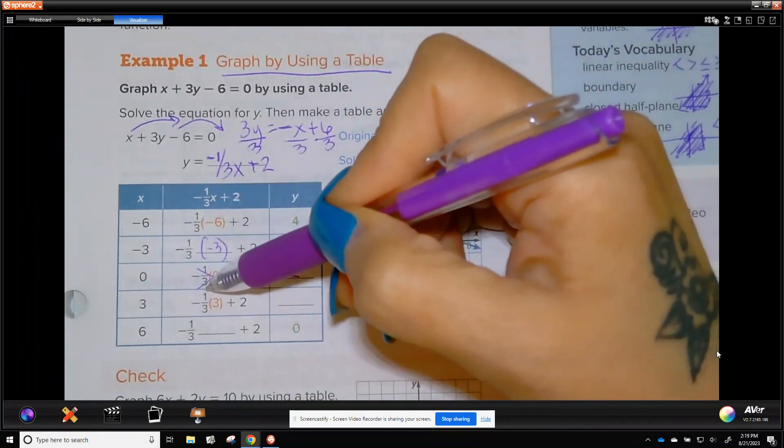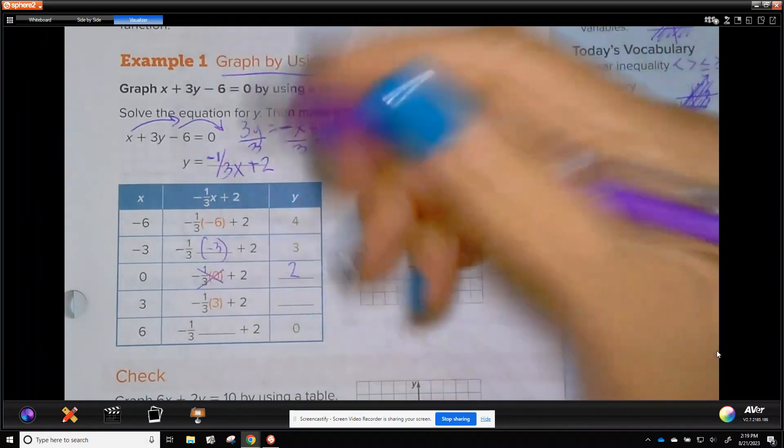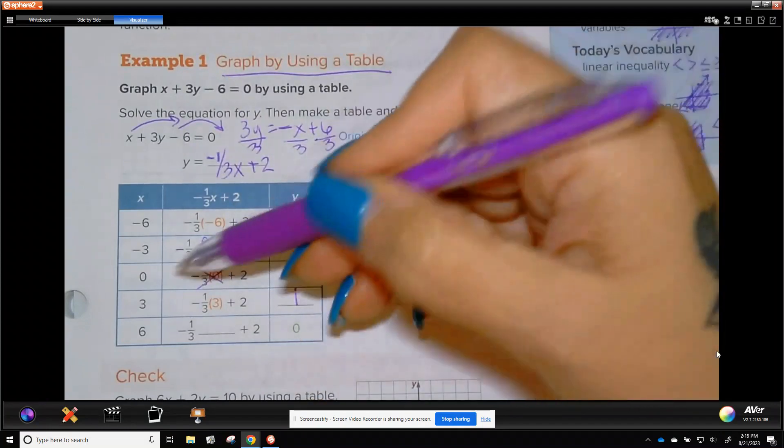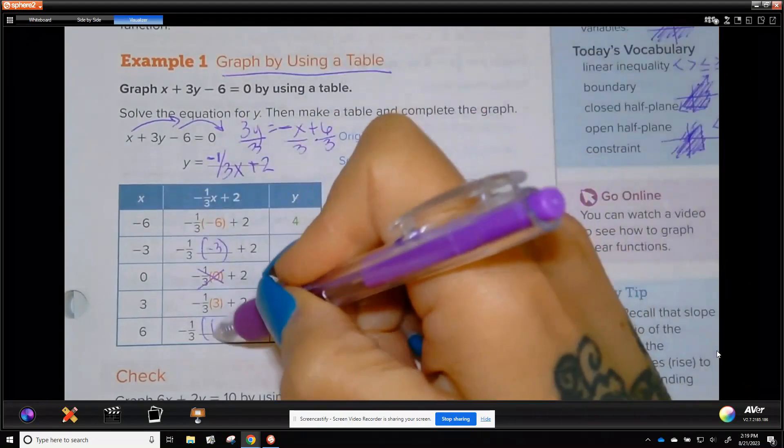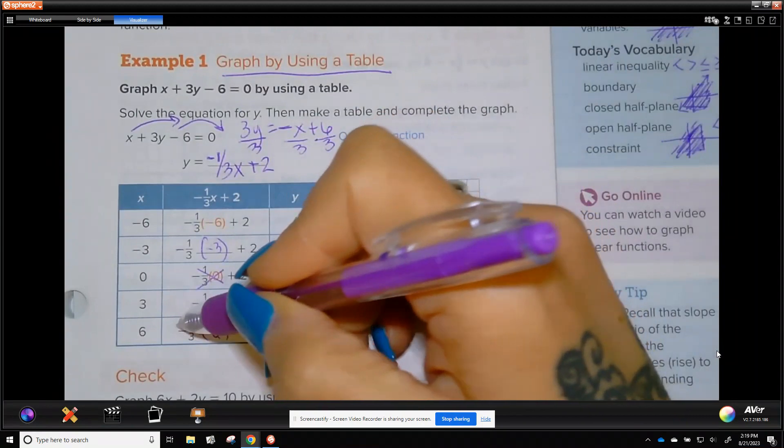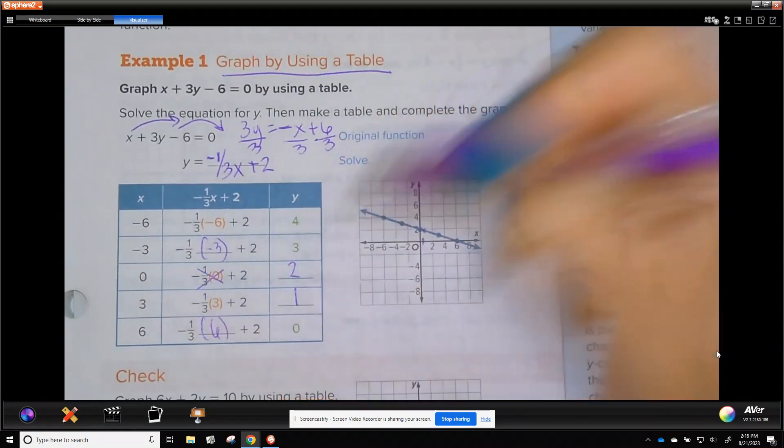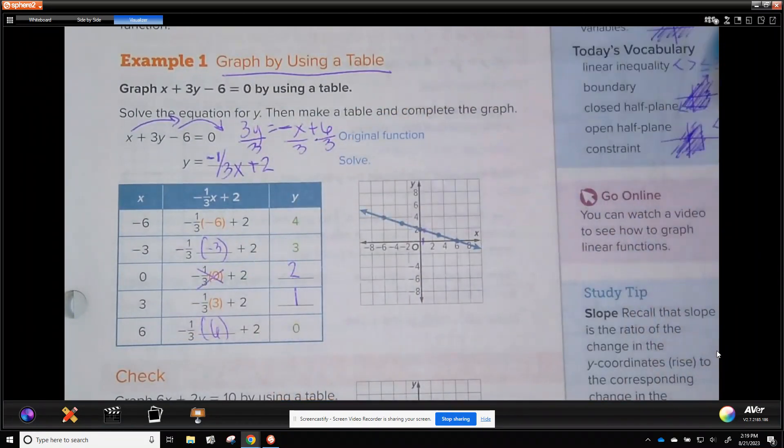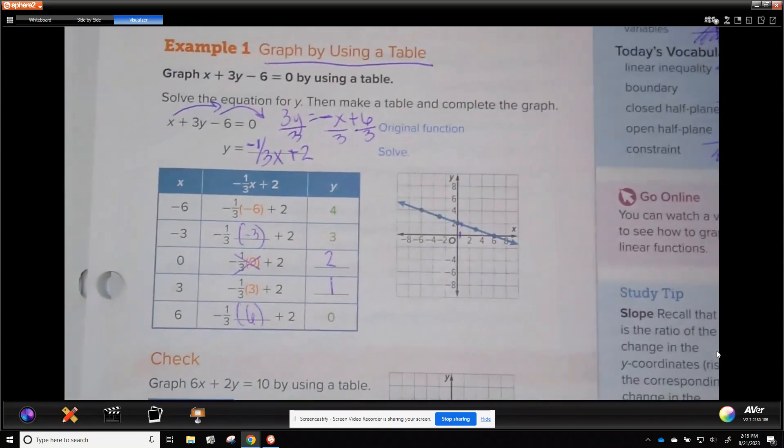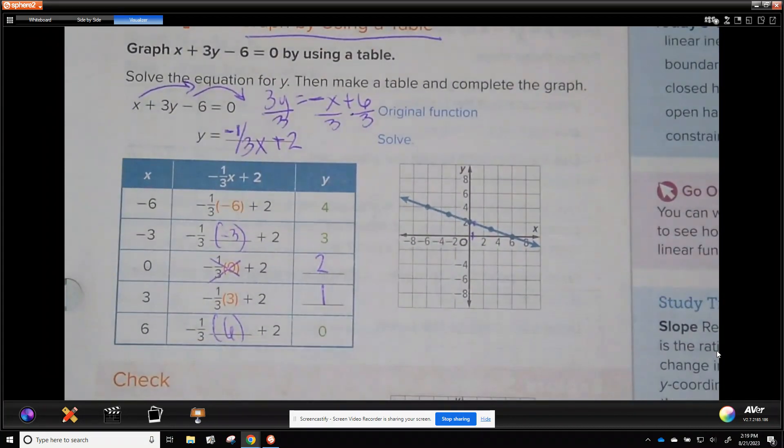Negative 3, negative one third of negative 3 is a 1, 1 plus 2 is 3. Zero, zero is easy because you just ignore that, and you have 2. Three, negative one third times 3 is negative 1, plus 2 is 1. And then six, one third of 6 is 2, but it's a negative. Negative 2 plus 2 is 0. And they've already plotted those points there. We will do some that we plot in just a minute.